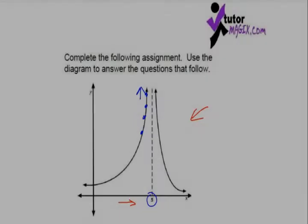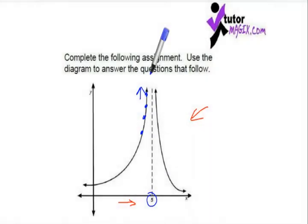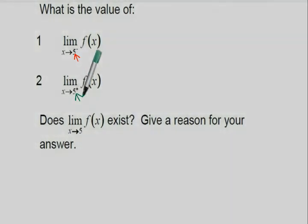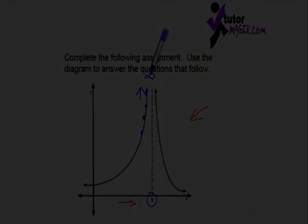Now imagine there was a number that we could define with the symbol infinity. It's not a specific number because it is so big, but assume it was a number. Then we could say the y values will tend to infinity. The same will happen in the next question, when we approach 5 from the right-hand side.